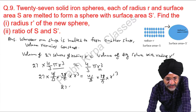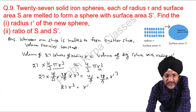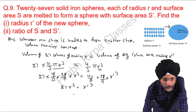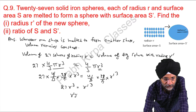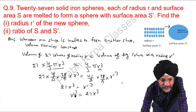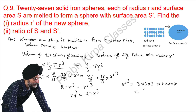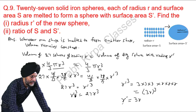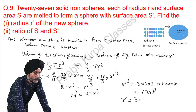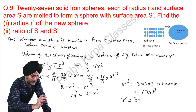After cancelling common factors, what remains is 27 R cubed equals R dash cubed. We can write 27 as 3 times 3 times 3, so R dash cubed equals 3 cubed times R cubed. Therefore, R dash equals 3R — the radius of the big sphere is 3 times the radius of the small sphere.